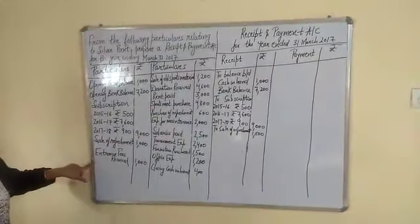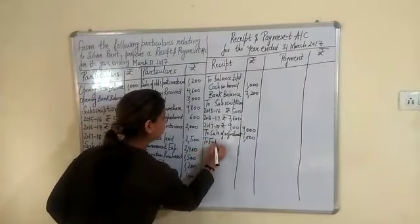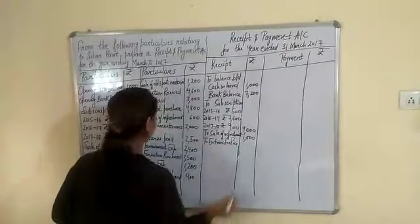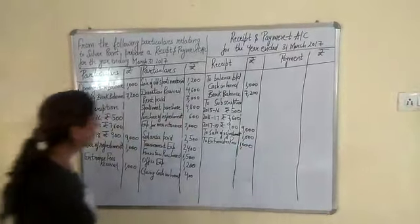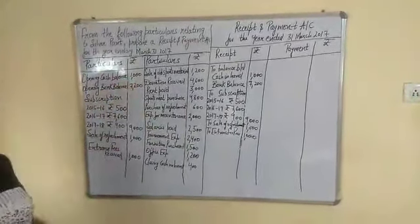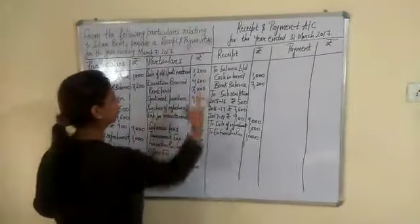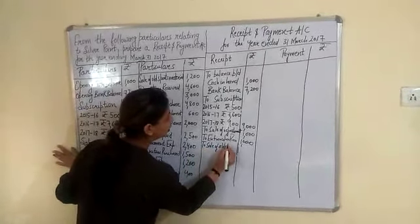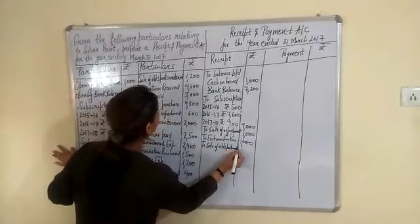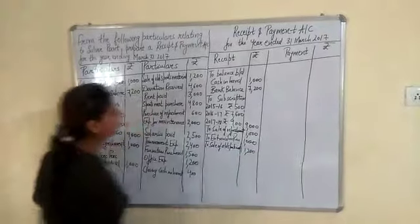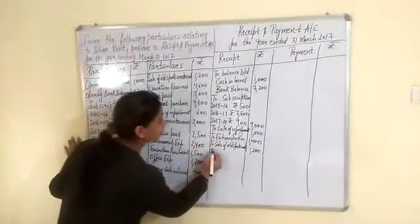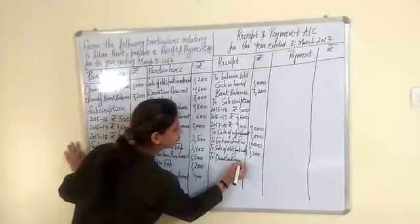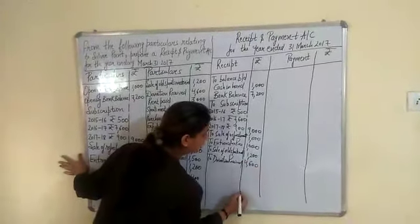Entrance fees received is also a receipt, so we write 'To Entrance Fees Received', which is rupees 1,000. Then sale of old sports material — when we sell anything, that time we get money, so it is written on the receipt side: 'To Sale of Old Sports Material', which is rupees 200. Donation received is also a receipt, so we write 'To Donation Received', which is rupees 40,600.